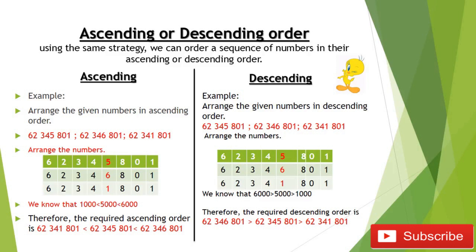The next heading is descending. Descending is the opposite of ascending. It means we arrange the numbers from largest to smaller. We have three numbers: 62,345,801, 62,346,801, 62,341,801. The given place value chart shows the numbers 561, the difference in thousands value. We know that 6000 is greater than 5000, and 5000 is greater than 1000. Therefore, the required descending order, you can see the changing of the value. When we put a big value in descending, the first value is 346, then we have 345, then we have 341. This is the same as you can compare your older brother to the younger brother.